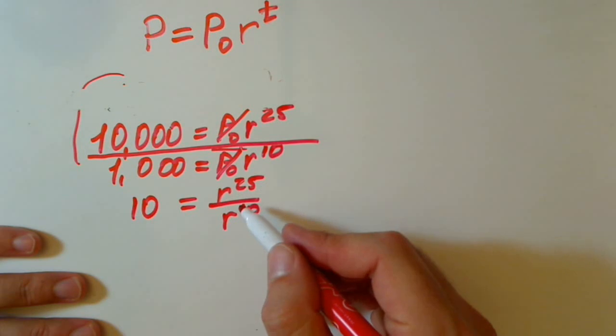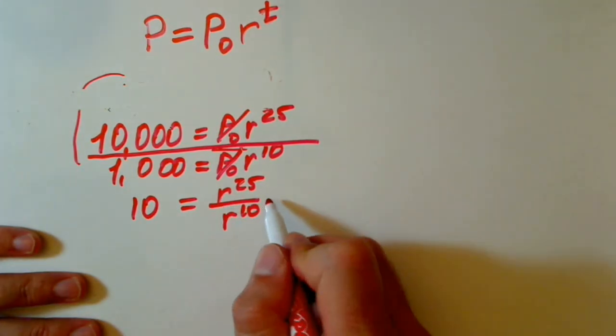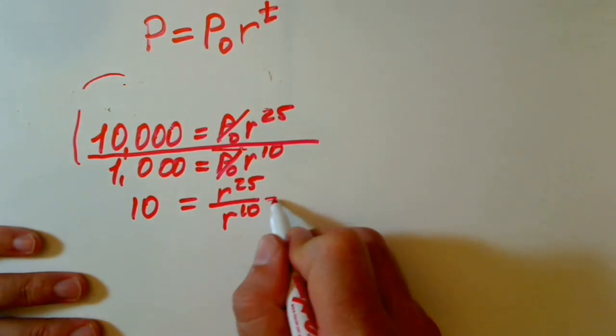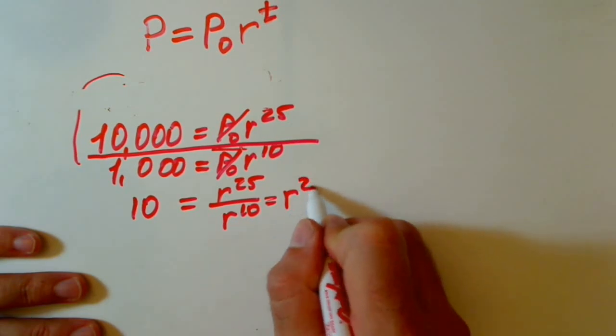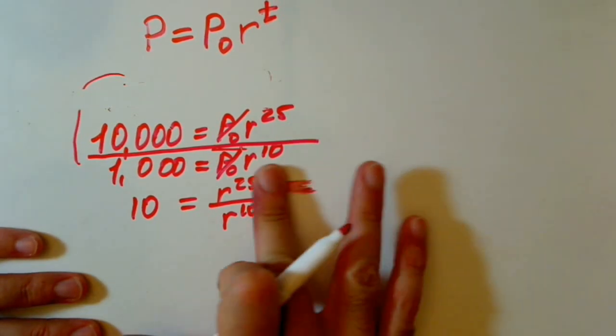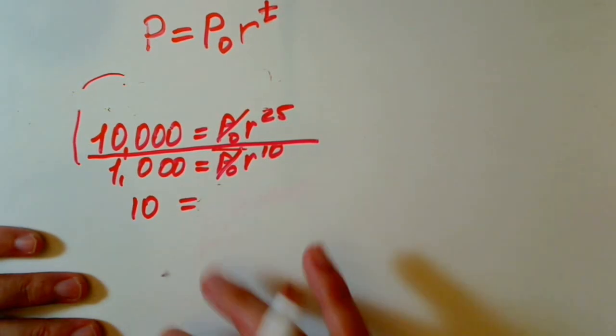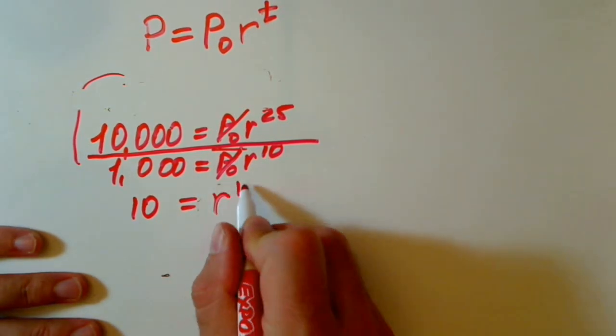And when we have division with the same base, our exponent is just subtracting. And we have r raised to the 25th minus 10, or let's write it like r to the 15th power.